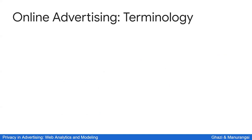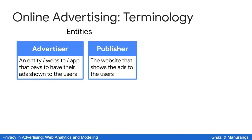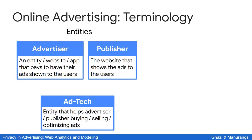Before jumping into privacy, let's recall some terminologies in online advertising. There are several key entities: the advertiser pays to show their ads — this could be a website or app. The publisher is the website that actually shows the ad. The ad tech, such as Google Ads or Facebook Ads, is a platform that helps advertisers and publishers buy and sell ads. Today we'll focus mostly on the advertiser and publisher.